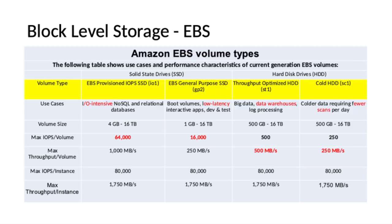EBS Provisioned IOPS SSD is used for IO-intensive workloads such as NoSQL, DynamoDB, and relational databases. EBS General Purpose SSD is a bit cheaper and is mainly used for low-latency interactive applications. Both HDD options are basically used for data warehousing and archiving respectively. Another thing to remember is the maximum IOPS per volume: EBS Provisioned IOPS SSD maximum IOPS per volume is 64,000, whereas EBS General Purpose SSD is 16,000. You can expect questions from this section as well.